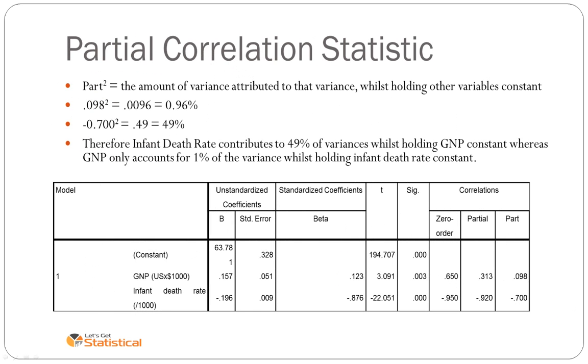Finally, we have a new statistic that I wanted to introduce today. It's the partial correlation statistic. The partial correlation statistic tells you the amount of variance whilst holding other variables constant. It's generated by asking for the part correlations when you are generating them in SPSS. You square the part correlations, and then that gives you what percentage of the variance whilst holding the other variable constant is attributed to by that variable. So that concludes the lecture today. Thank you very much. Stay tuned to the website for more lectures down the track.